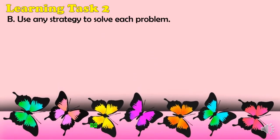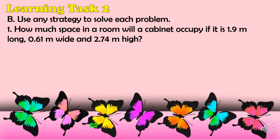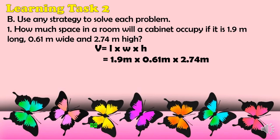For Learning Task 2B, use any strategy to solve each problem. Problem 1: How much space in a room will a cabinet occupy if it is 1.9 meters long, 0.61 meters wide, and 2.74 meters high? Using V = L × W × H, substituting: 1.9 m × 0.61 m × 2.74 m. That gives us a volume of approximately 3.17566 cubic meters.